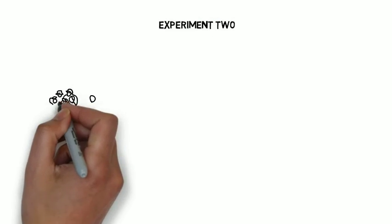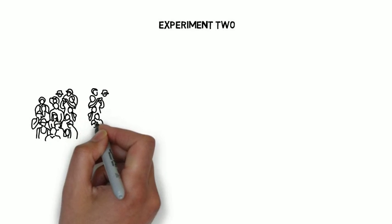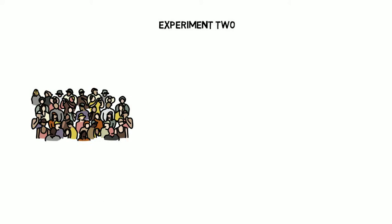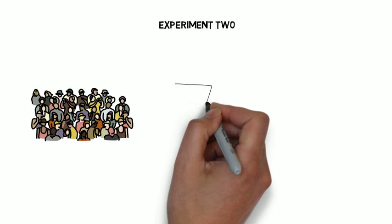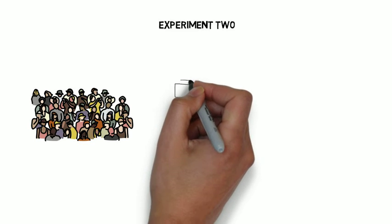Experiment two. So a little bit different this time. One of the main differences being the sample size in experiment two was much larger this time. This time they had 150 participants.